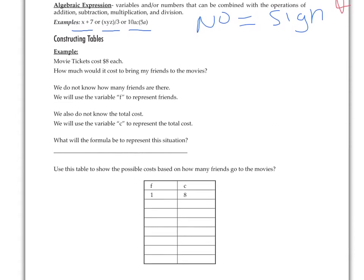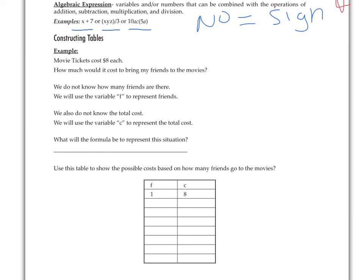In constructing tables, this is the beginning of translating to make a table for some information. This is going to be an easy way for us to find some general information. Here's another word problem for us. Movie tickets cost $8 each. How much will it cost to bring my friends to the movie? Well, there's a piece of information we don't have there, and that's how many friends are we bringing. So we're going to use the variable F to represent the friends, so we can make a general statement that no matter how many friends I have, maybe this week I have two friends, and next week I might have 12, I can still use the same table and the same equation or expression to figure out how much it's going to cost me. So we don't know the total cost. This is what we're looking for. So we're going to use the variable C to represent the total cost.